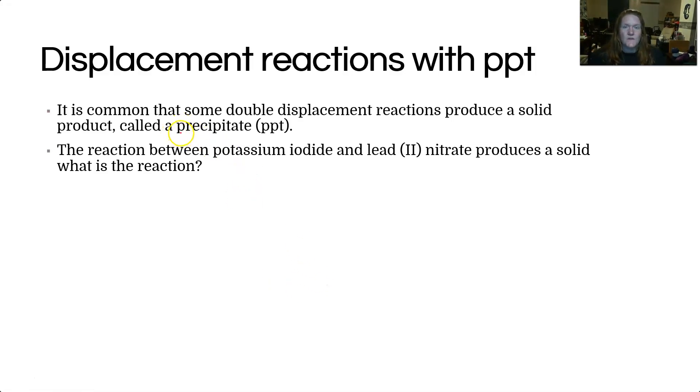So displacement reactions. We call these double displacements or double replacements. They form precipitate. And we talked before about the difference between a deposit and a precipitate. So deposit is what you get in a single displacement reaction where it forms on a surface, usually on the metal element that you put into the solution.